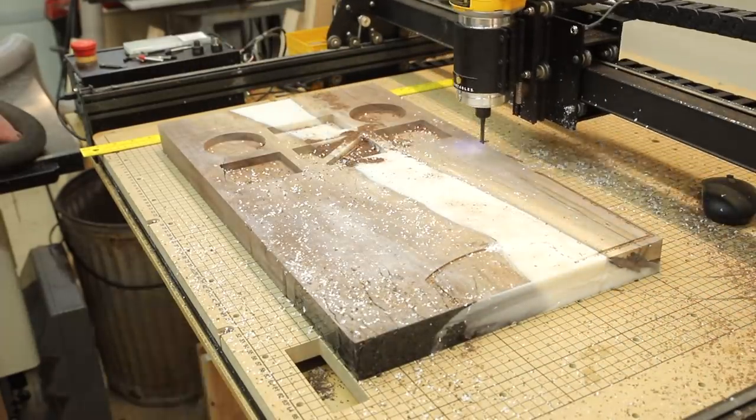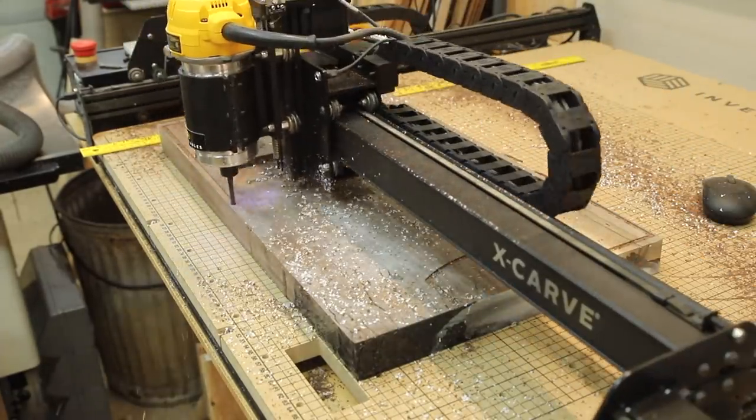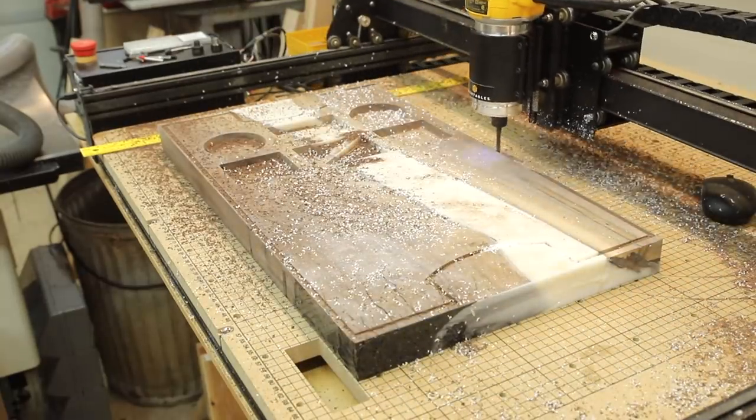Once the machine had cut out all the pockets, I had it cut out the shape of the serving board which has recesses on each end for handles that I'll add in a later step.